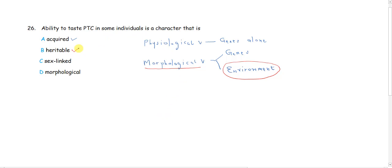Is it heritable? For something to be heritable, it means it must be genetic. Of course, we could argue that morphological variation is affected by genes as much as physiological variation is also affected by genes. So, let's go to the third option: sex-linked.